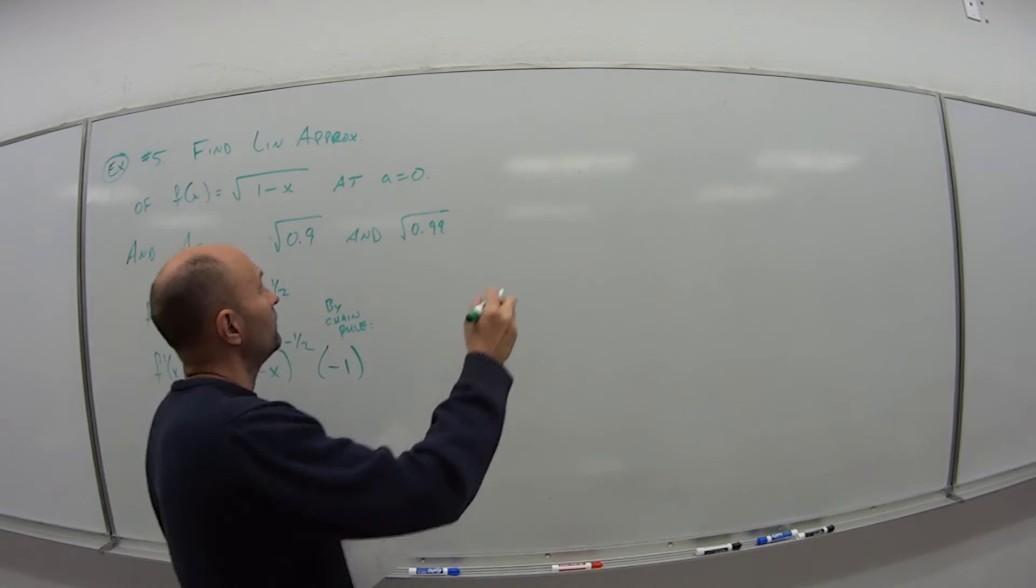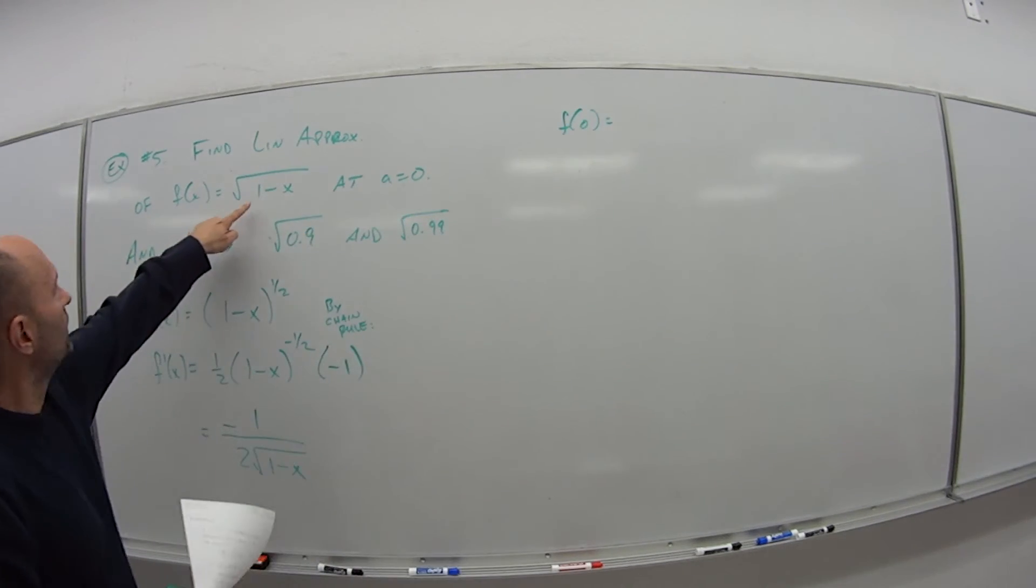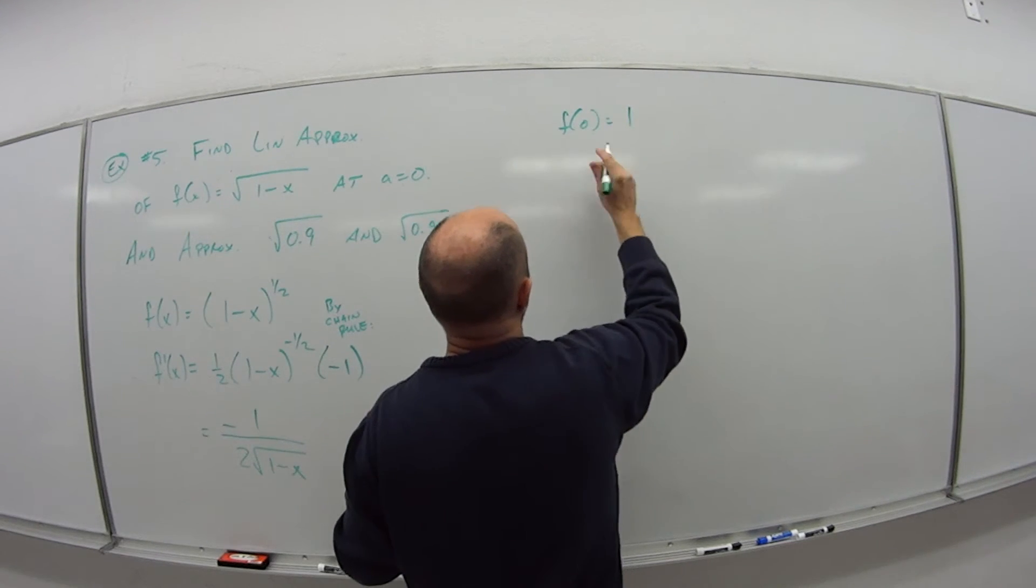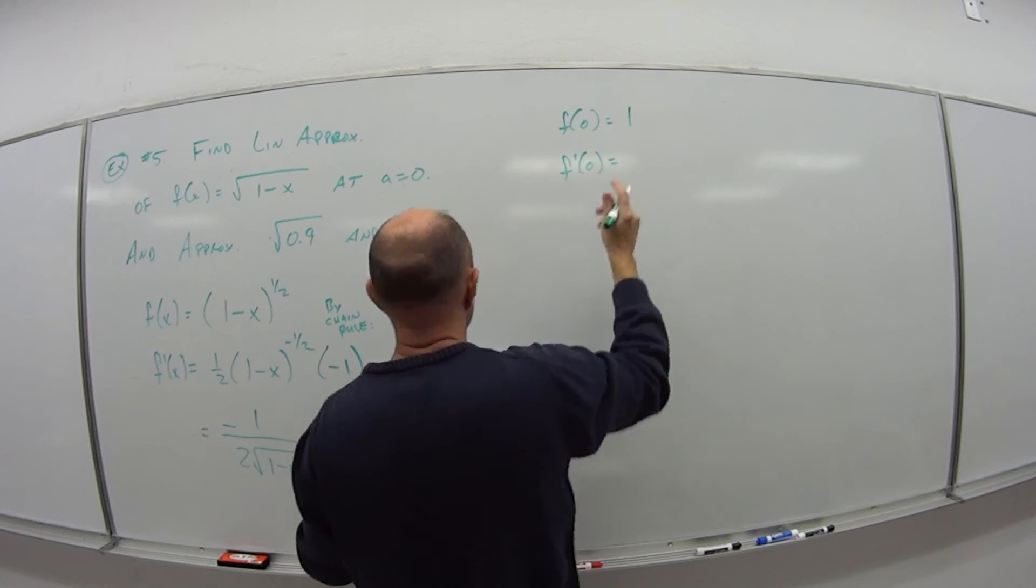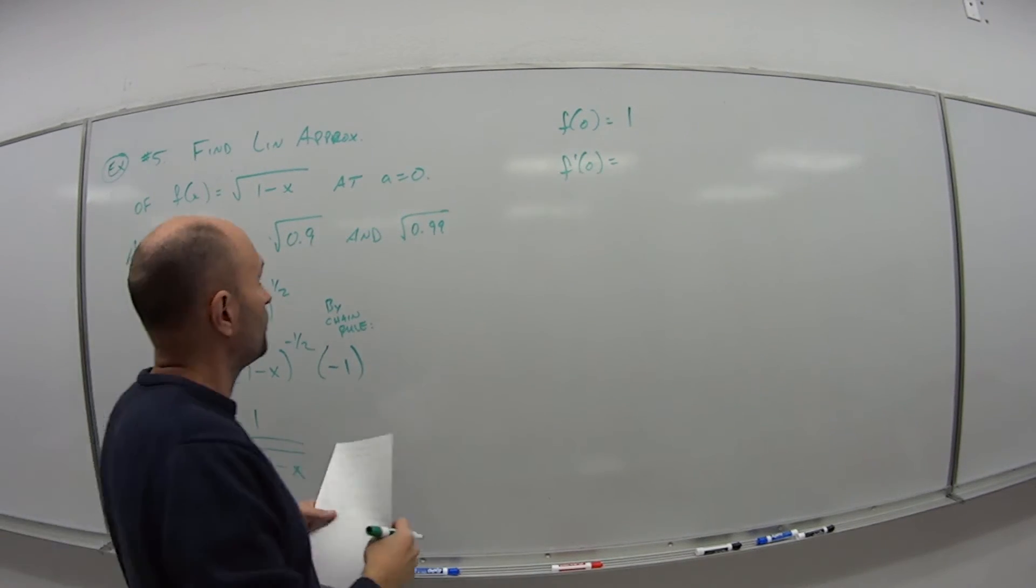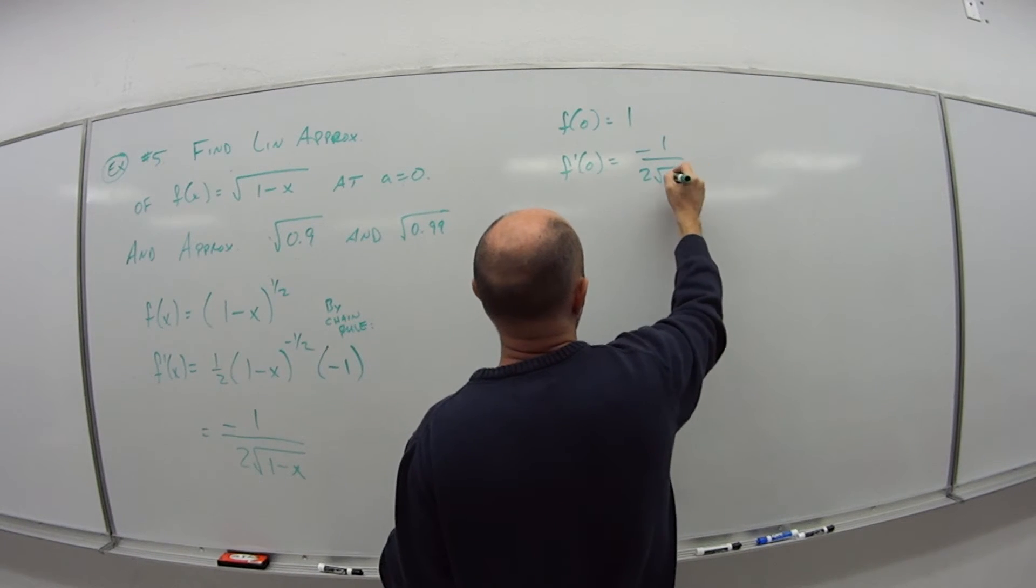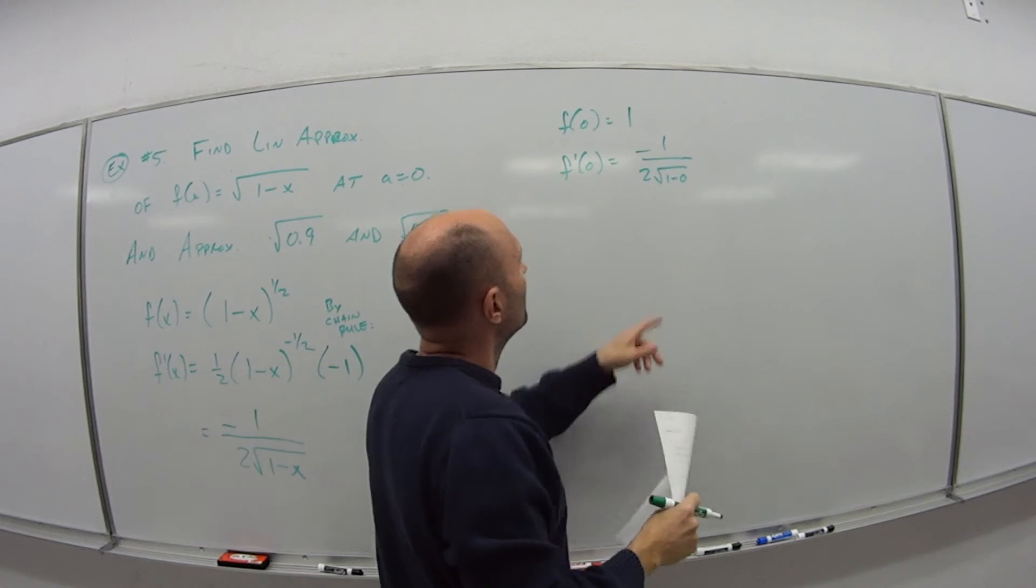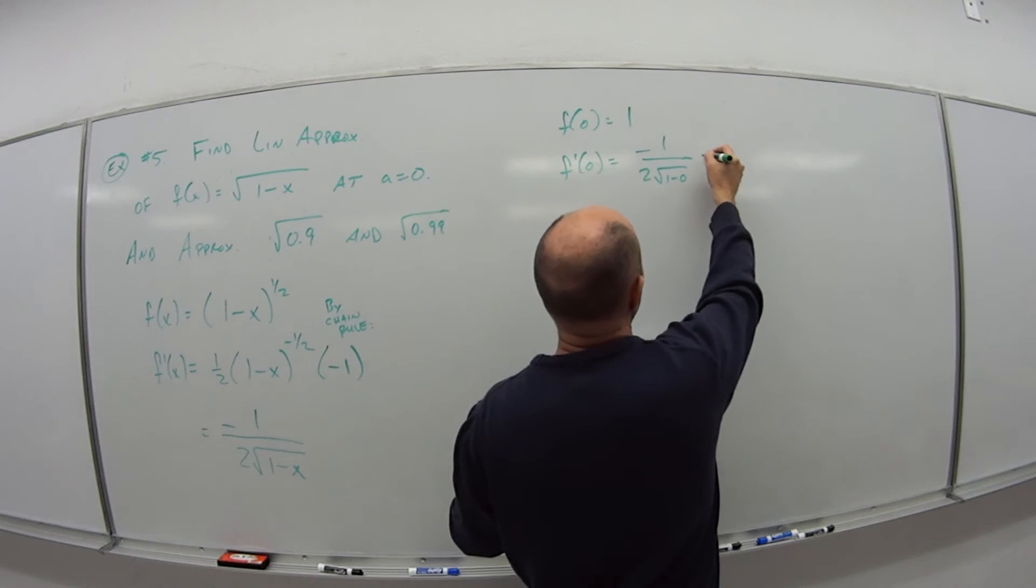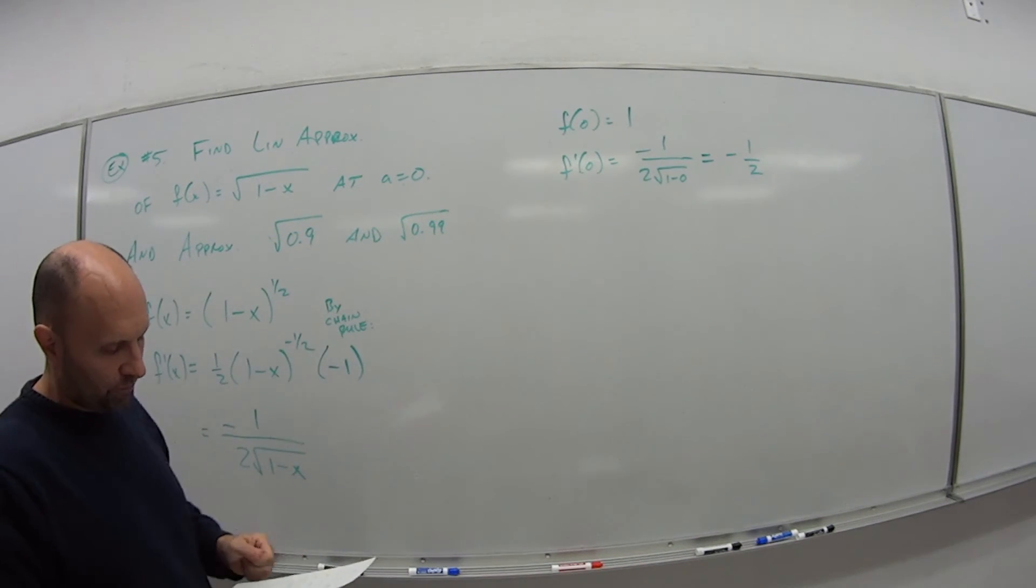So at the point 0, so f of 0, well I just plug it in here. 1 minus 0 is 1, square root of 1 is 1. f prime of 0, so again if I plug in 0, it's minus 1 over 2 times the square root of 1 minus 0. Square root of 1 is 1, times 2 is 2, so this is negative 1 half is my f prime of 0.